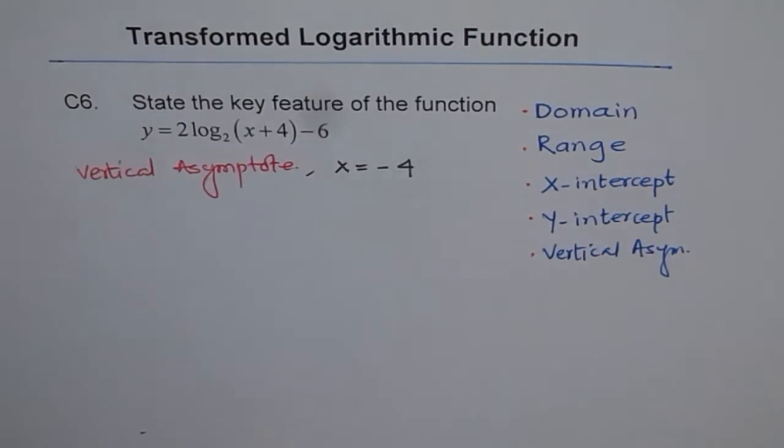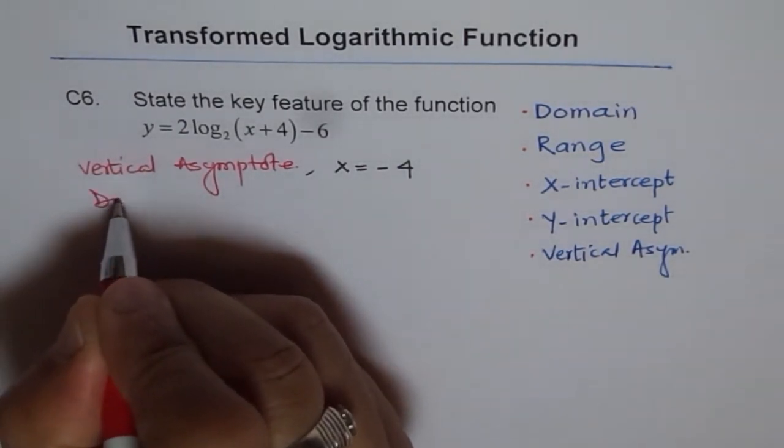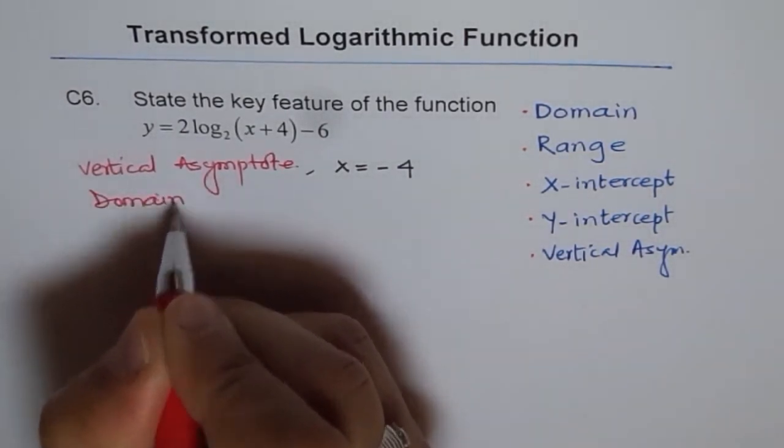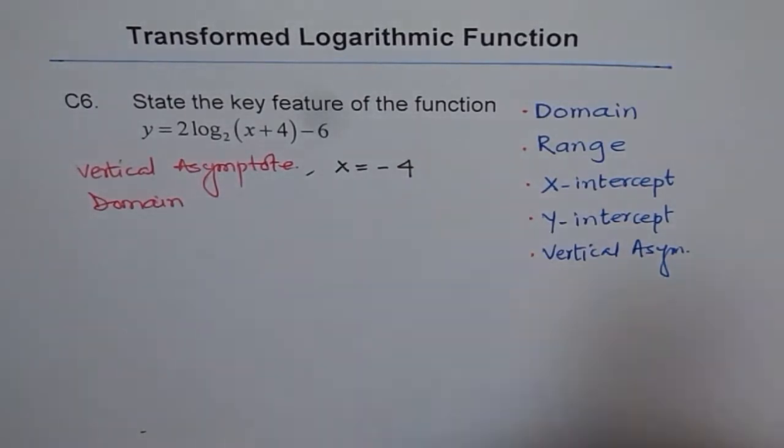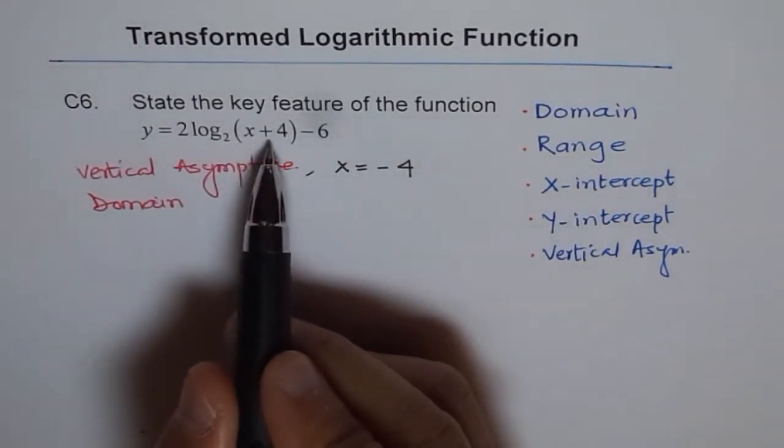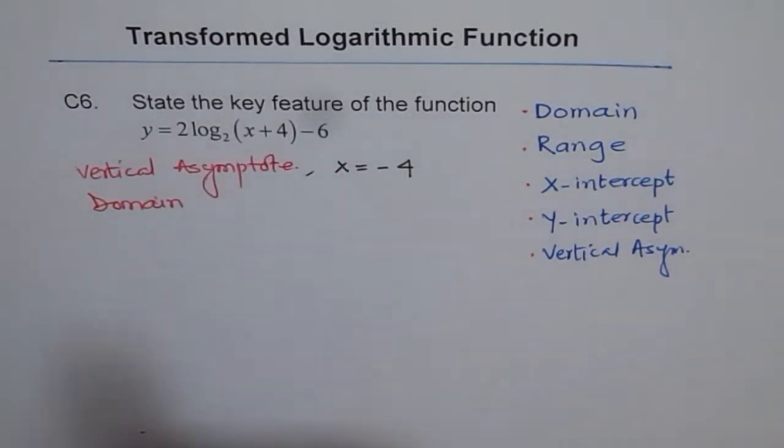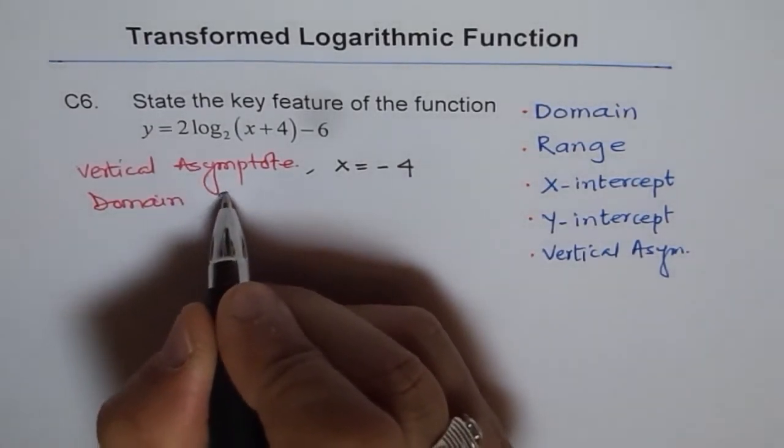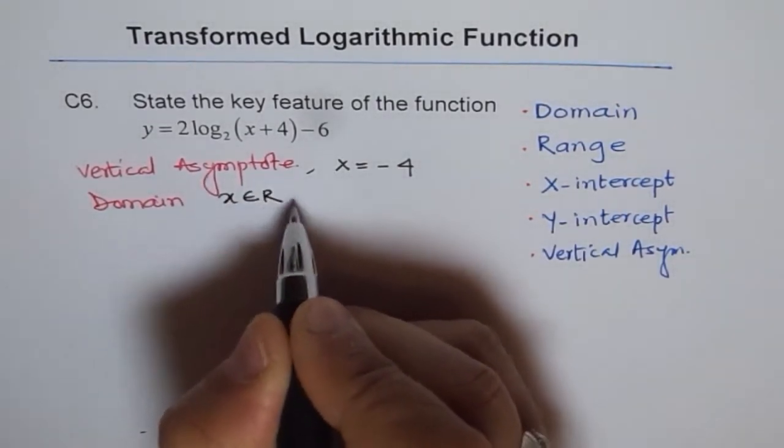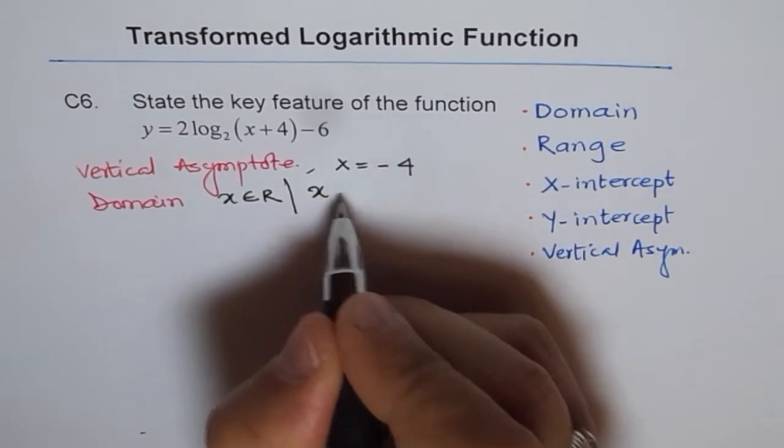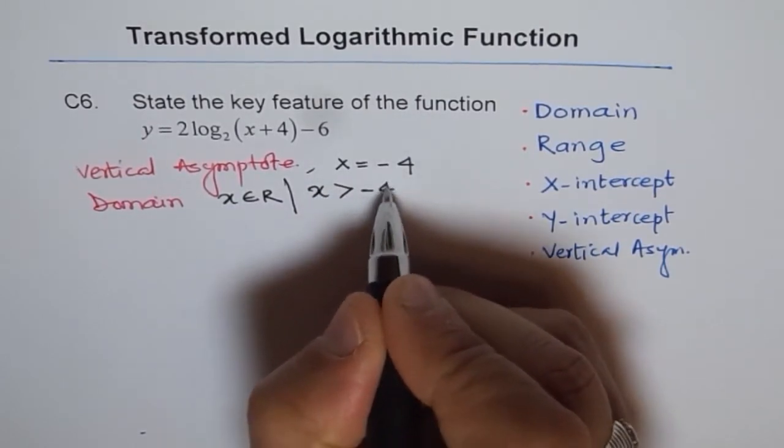So the vertical asymptote is at x equals minus 4. Now, we get to domain. Domain is, in this case, on the right side of the vertical asymptote. And we say domain is x belongs to real numbers where x is greater than minus 4.